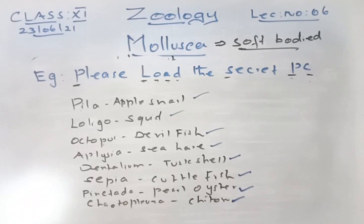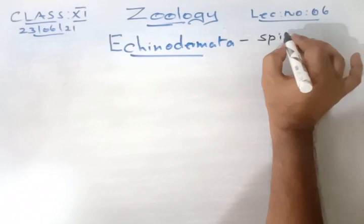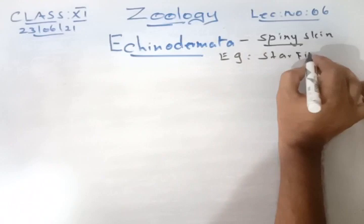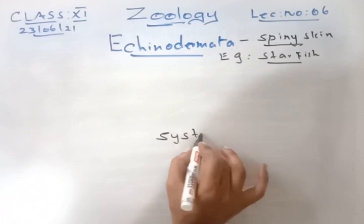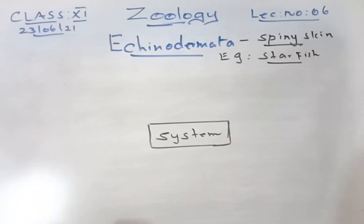The next phylum is Echinodermata, also called spiny-skinned animals. The skin has spines — for example the starfish. We will first discuss the various systems in this phylum and then the statement-oriented parts.